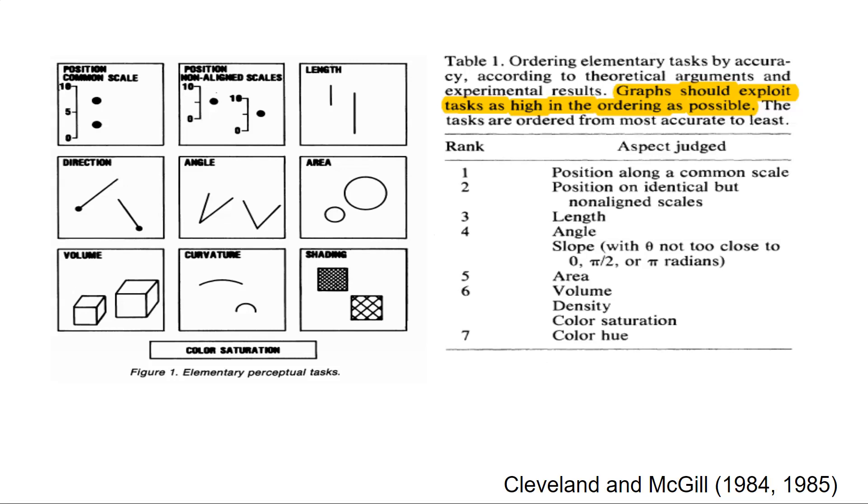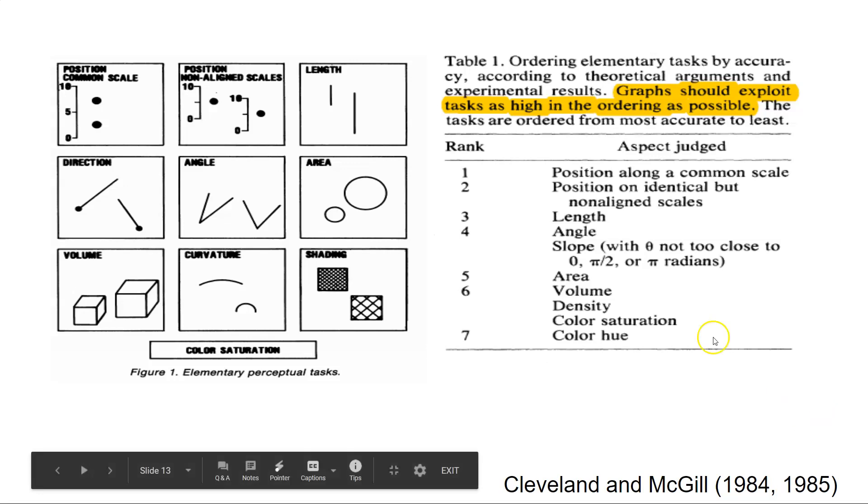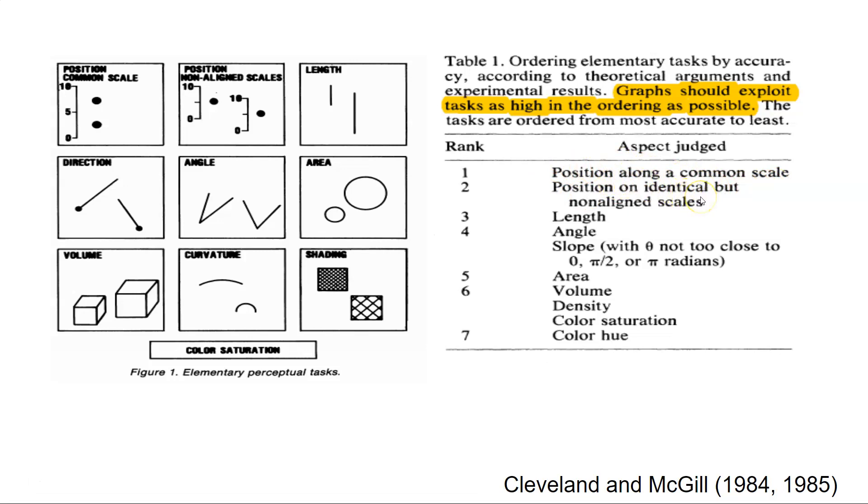And so these two researchers found that if you were to organize data in these higher ranked things, like judging along a position on a common scale, judging along a position on identical but non-aligned scales, judging by length, those are really the more better ways to visualize data. And so what does that mean? This means that things like bar charts where you're just judging the length of an object turn out to be really valuable and really easy for the reader to do. When you start judging things like angles and areas and volumes and shadings, that can be tougher for the human eye to pick up on. And so ideally, and this is a tip for doing your own analysis, think about organizing things along a common scale or non-aligned scales and then think about things like length.